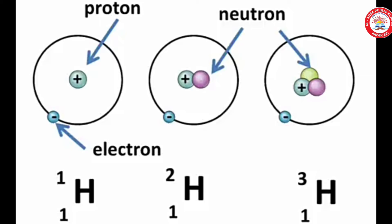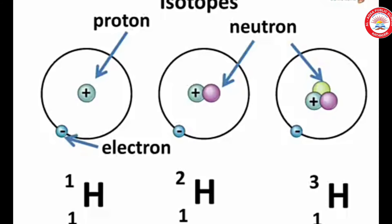For example, here we can see the hydrogen atom. Actually it has 3 atomic species. The atomic number of each one is 1, isn't it? But the mass number is 1, 2 and 3 respectively. These are known as isotopes of hydrogen.